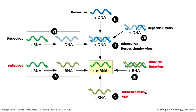Today we're going to talk about three different kinds of RNA-containing viruses: class 3, which have double-stranded RNA; class 5 with negative-strand RNA; and class 4 with plus-strand RNA. Class 6 — plus RNA with a DNA intermediate — we're going to reserve for another lecture, because that gets its own discussion.